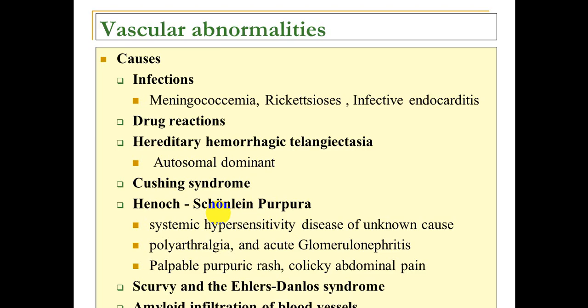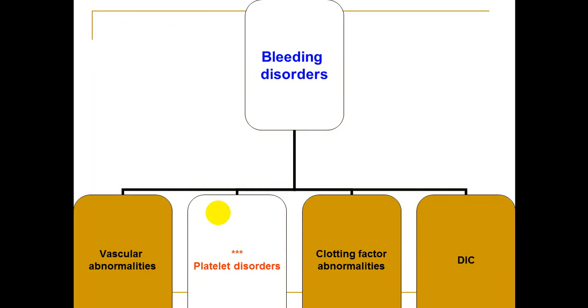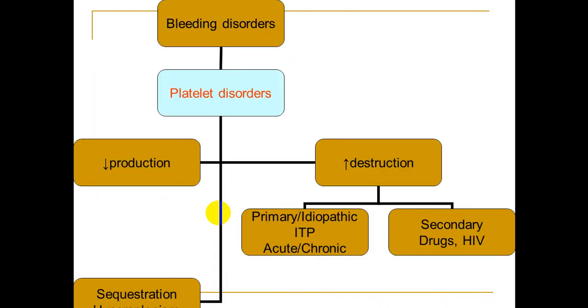Additional vascular causes include scurvy caused by vitamin C deficiency, Ehlers-Danlos connective tissue disorders, and amyloid infiltration mainly caused by multiple myeloma. Now let us talk about platelet disorders, which are the main cause of bleeding disorders.